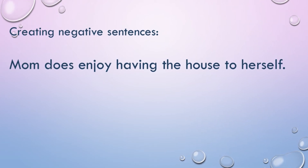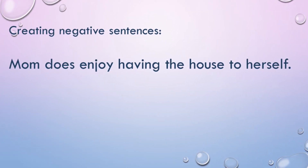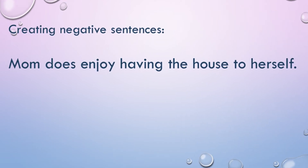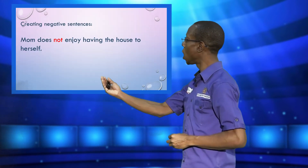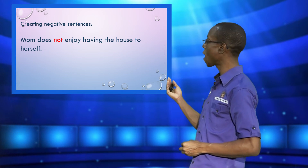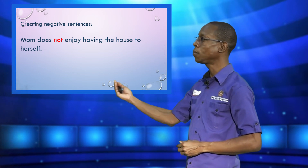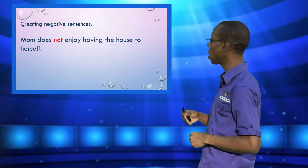Now let us try to rewrite these sentences as negative sentences. The first is 'Mom does enjoy having the house to herself.' We have to put 'not' after the to-do form. The negative sentence becomes: 'Mom does not enjoy having the house to herself.'